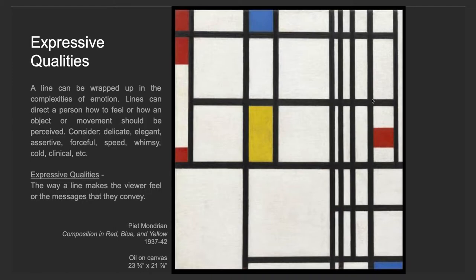Lines have expressive qualities. A line can be wrapped up in the complexities of emotion. Lines can direct a person how to feel or how an object or movement should be perceived. Consider descriptors like delicate, elegant, assertive, forceful, speed, whimsy, cold, clinical. These are all descriptors that can describe line quality. The expressive quality is the way a line makes the viewer feel or the messages that lines convey. So use descriptors to describe your expressive qualities.